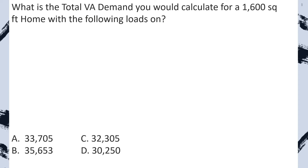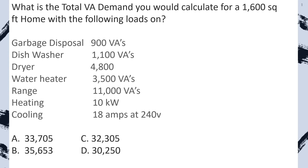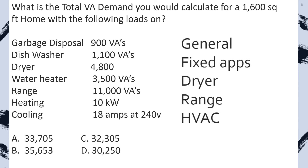What is the total VA demand you would calculate for a 1,600 square foot home with the following loads? Now I know this looks daunting, but we're just going to take it one piece at a time. You've worked very hard up to this point and I know you can do it. I want us to get used to laying out all of our calculations like this. On our piece of paper, write general, fixed appliances, dryers, ranges, and HVAC, and we're going to fill them in one at a time.